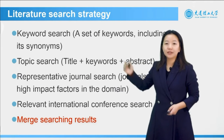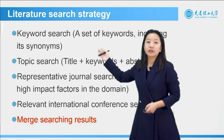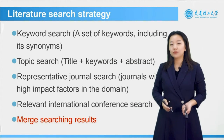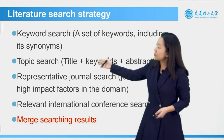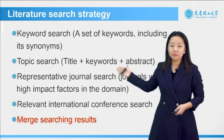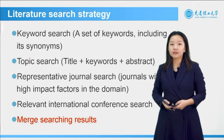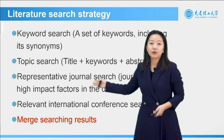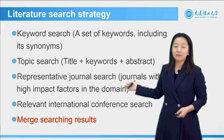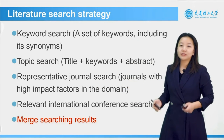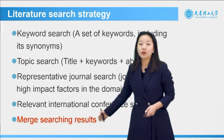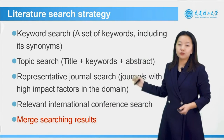Here are tips on literature search. We usually use keyword search — you can use a set of keywords. We also use topic search, which means searching the keywords in the title, keywords field, and abstract. We also use representative journal search, meaning journals with high impact factors in your own domain, and relevant international conference search. In the end, we merge all the search results together.